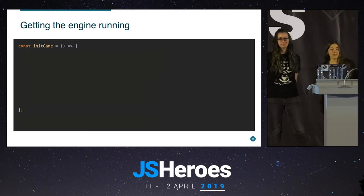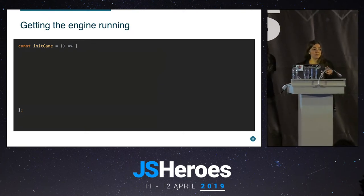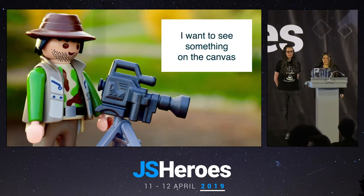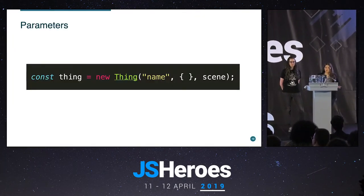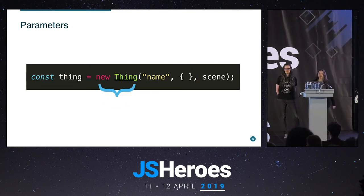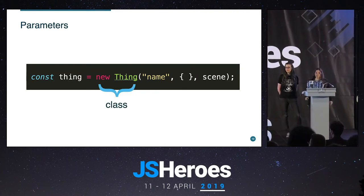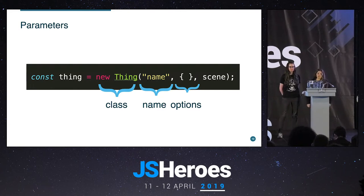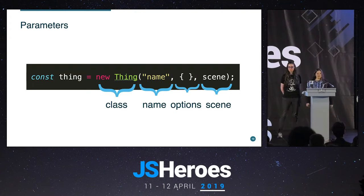We still can't control the scene — we don't know where we're looking or how to change position. That's handled by the camera. But first, an important note about Babylon.js: it's written in TypeScript, so everything is a class, and most classes follow the same constructor pattern. It always starts with a name, then options, and then you say which scene it belongs to. If you only have one scene you don't need to specify it, but with multiple scenes you must. That's the standard pattern you'll see throughout this talk.